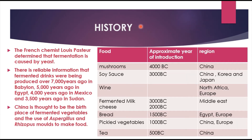Coming to the history, we know Louis Pasteur determined that fermentation is caused by yeast. There is also reliable information that fermented drinks were being produced over 7,000 years ago in Babylon, 5,000 years ago in Egypt, 4,000 years ago in Mexico, and 3,500 years ago in Sudan. China is thought to be the birthplace of fermented vegetables and the use of Aspergillus and Rhizopus molds to make foods.